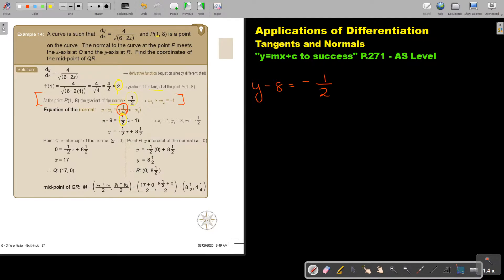So what do I substitute also? Don't forget my point. So what is my point? There it is. So this is x and this is y. So in the place of y I put 8 and in the place of x I put 1. And then I just simplify that. And that is the equation of the normal.